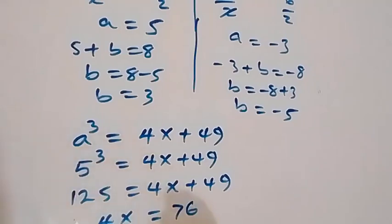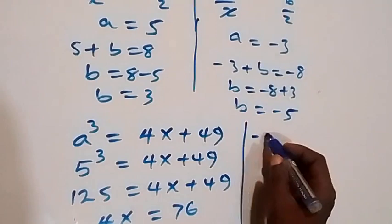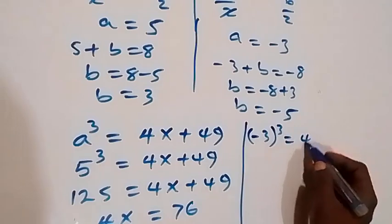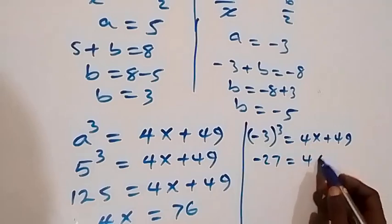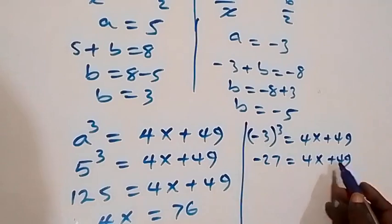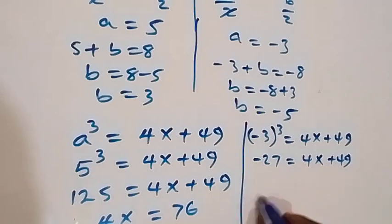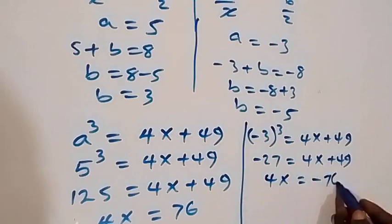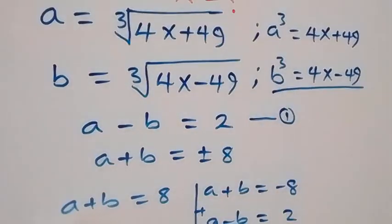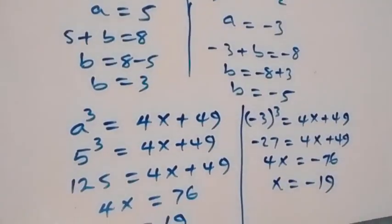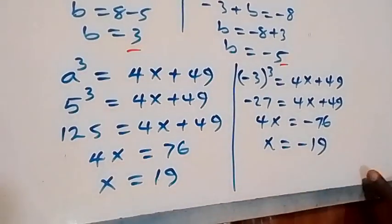For A equals minus 3, we have minus 3 cubed equals 4x plus 49. That is minus 27 equals 4x plus 49. Taking 49 to the other side, minus 27 minus 49 gives minus 76, so 4x equals minus 76 and x equals minus 19. Using the B values of 3 and minus 5 also gives the same results: x equals 19 and x equals minus 19.